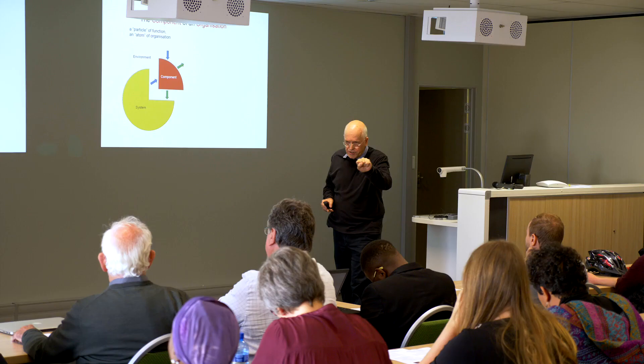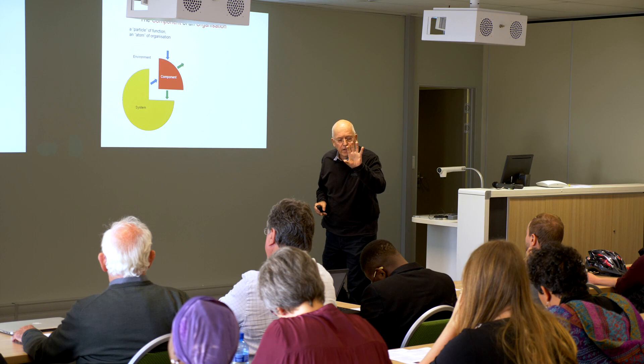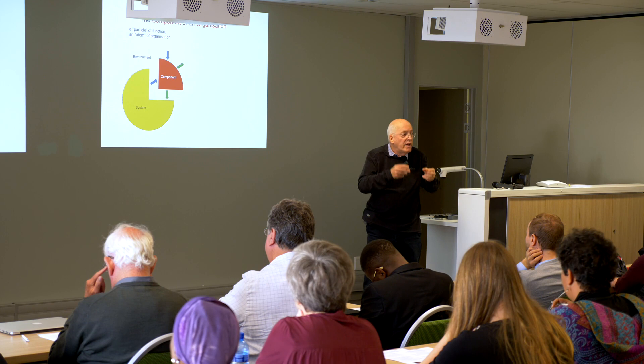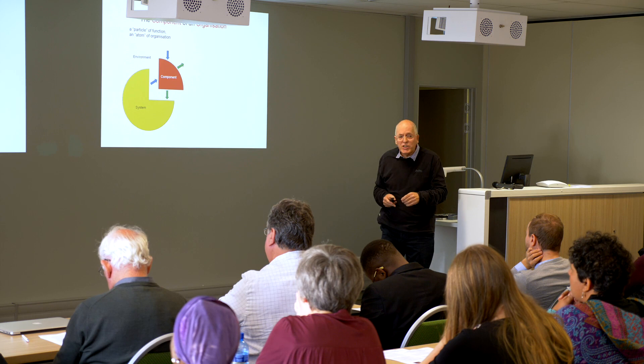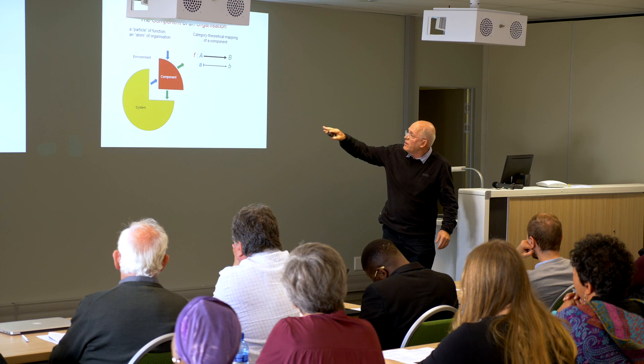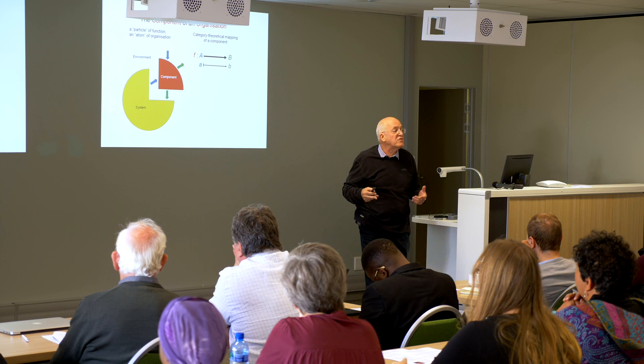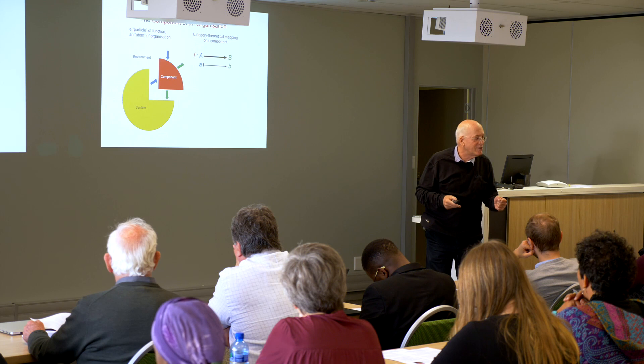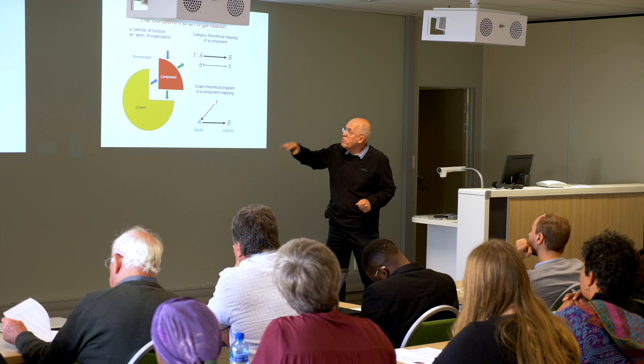Rosen said you can take any organization, any system consisting of components. You can think of a component as receiving inputs from the system and from the environment, and also giving outputs to the system and the environment. You don't actually have to define the system to do this — you can just think about the component. This is the formal mathematical way of doing it — mathematics called category theory. So you've actually been doing category theory without knowing it. But this graph theoretical diagram of a component mapping is a much more useful way of showing the same thing.